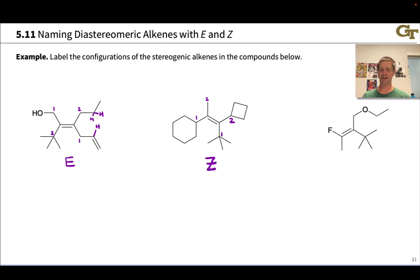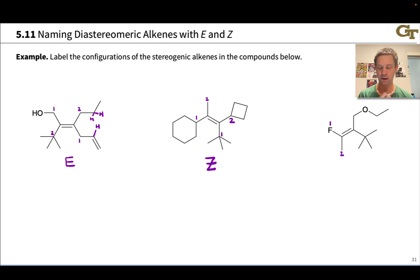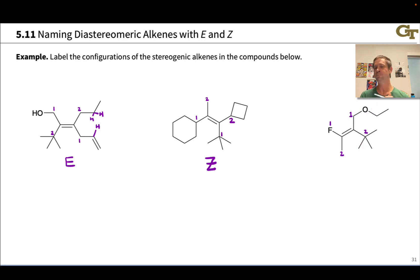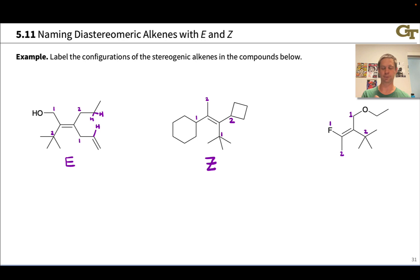In the last example, fluorine is heavier than carbon, so we prioritize the fluorine as 1 and the carbon as 2. At the other carbon of the alkene, we have a CH2O group versus a C(CH3)3 group, so the CH2O group gets higher priority due to O versus C at the first point of difference. The two higher priority groups are on the same side of the carbon-carbon double bond, so this is again a Z isomer.